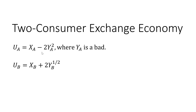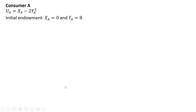One thing you'll notice here is that for consumer A, good Y is a bad good. As a consumer consumes more of good Y, utility would fall. Consumer A's utility function is as follows, and the initial endowment — the consumer does not have any units of good X, but the consumer has 8 units of good Y.